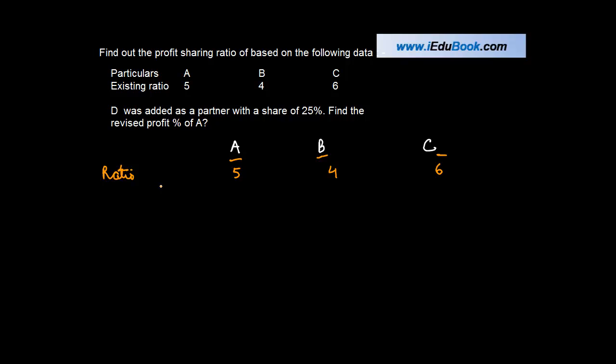Whenever you have these ratios you can also convert them into fractions by just dividing them by the sum of these three numbers. So 5 plus 4 is 9, 9 plus 6 is equal to 15. Or we can say the ratio or the fraction or proportion was this.